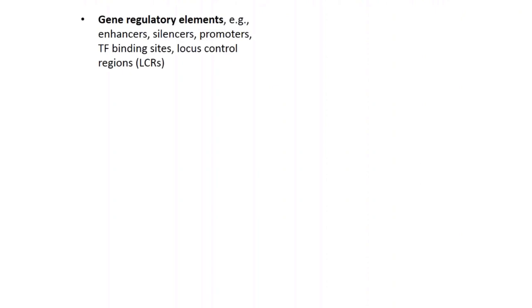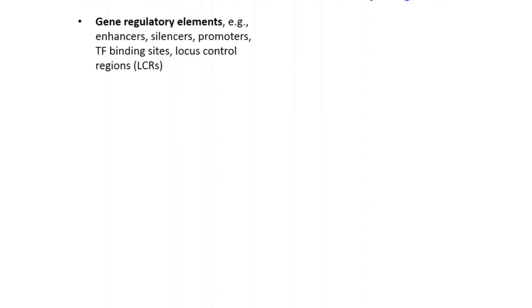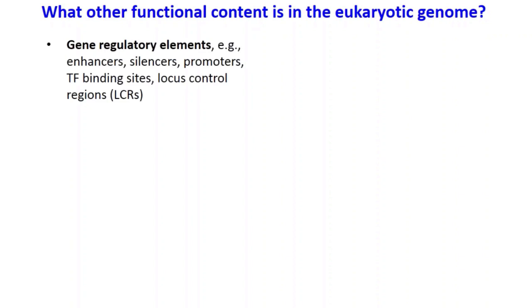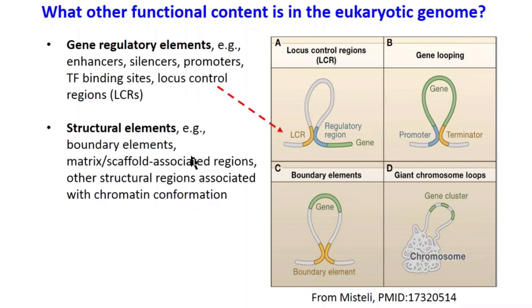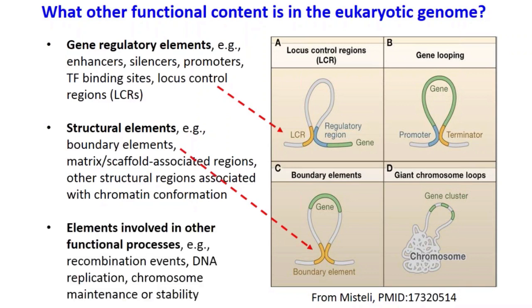That leads us to the question of what other functional content is present in the eukaryotic genome. It's known that there are gene regulatory elements such as enhancers, silencers, promoters, transcription factor binding sites, and locus control regions, such as the example shown here. There are also structural elements including boundary elements, matrix attachment regions, and other structural regions associated with chromatin conformation. And there are elements involved in other regulatory processes such as DNA recombination or repair, DNA replication, or chromosome maintenance or stability.